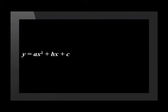The values of the a, b and c come from the quadratic equation y is equal to ax squared plus bx plus c.